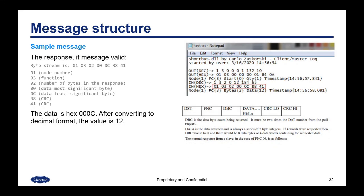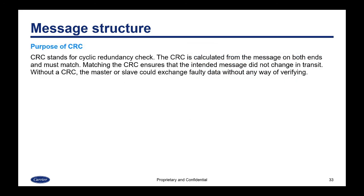The response, if the message is valid, will include much of the same identifying information, but will also include the result — the data will be presented in bytes in the return message. The purpose of the CRC (cyclic redundancy check) is to verify that the message is valid on both ends. The CRC is calculated from the message and must match. Matching the CRC ensures that the intended message did not change in transit. Without a CRC, the master or slave could exchange faulty data without any way of verifying it.